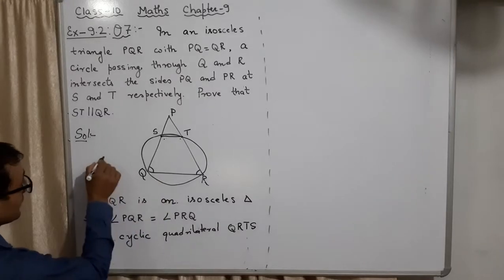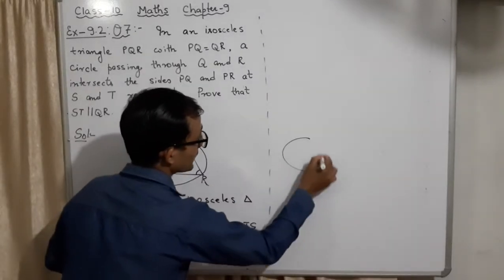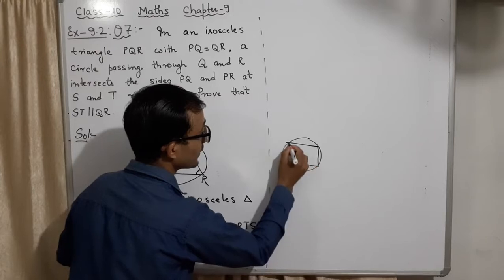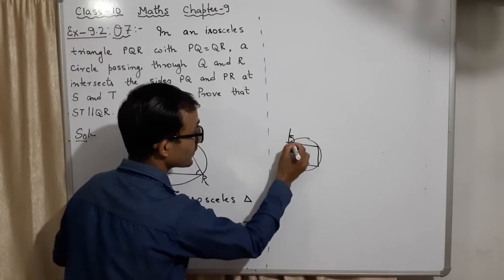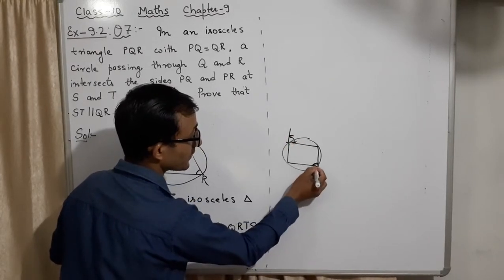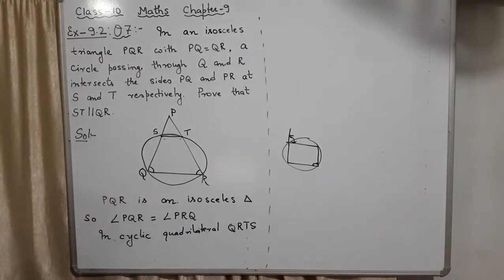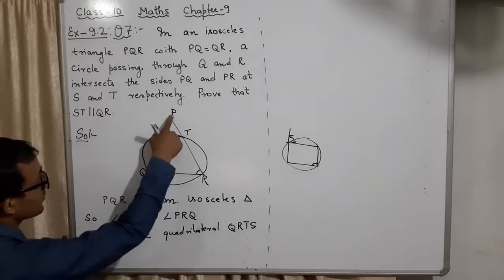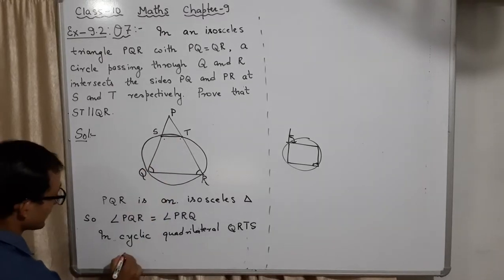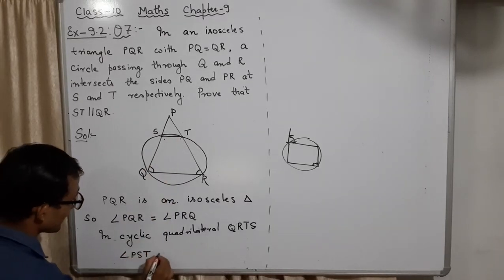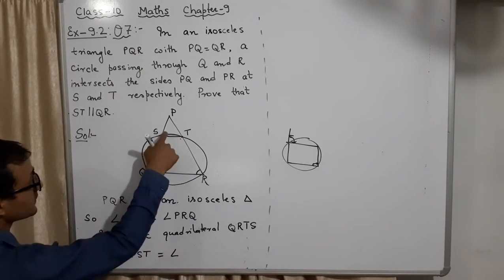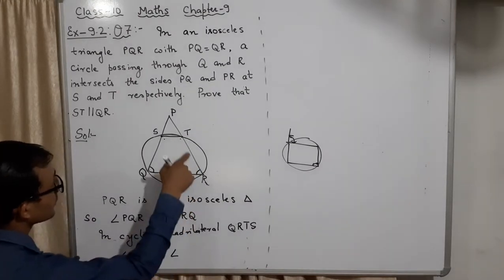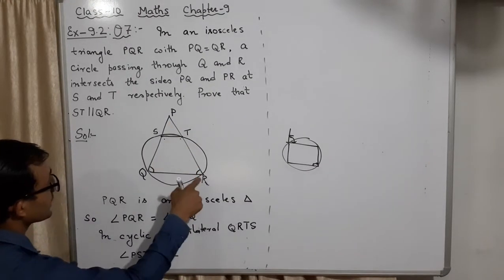If this is a cyclic quadrilateral, then the outside angle is equal to the opposite interior angle — that is the property we will use here. In cyclic quadrilateral QRTS, angle PST will be equal to angle PRQ.